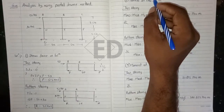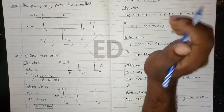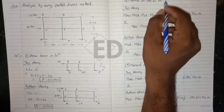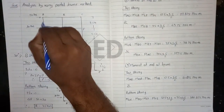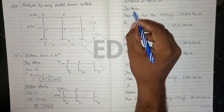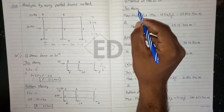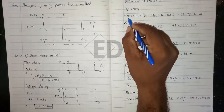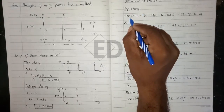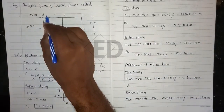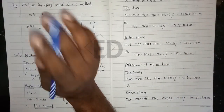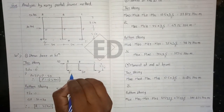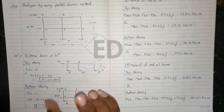Now moving towards our second step — that is the calculation of moment at the end of the column. For the top story, first of all we make the calculation for the top story. The moment from A to D is the same as the moment from D to A.